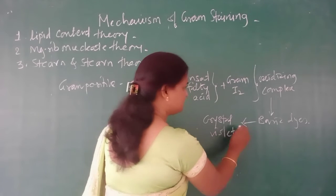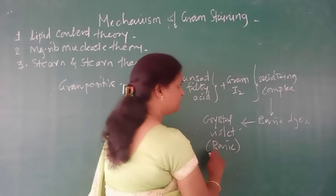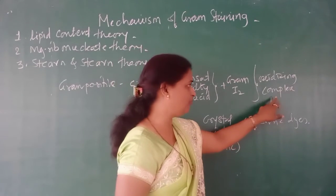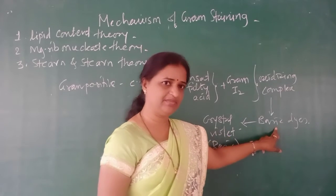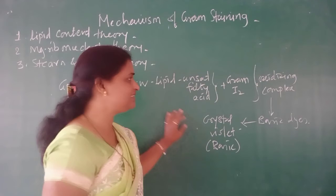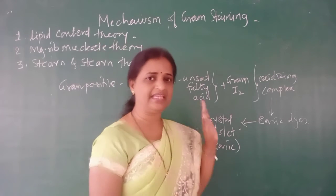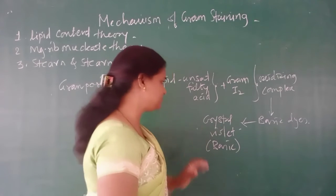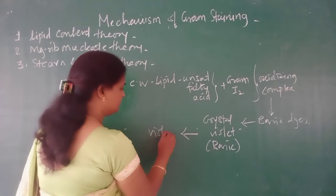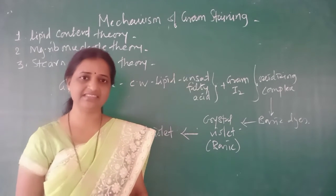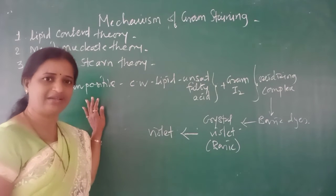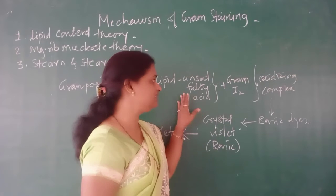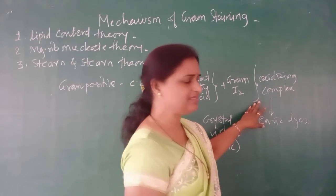This crystal violet can easily stain Gram positive bacteria, and once they get stained they cannot lose their color even after the application of the decolorizing agent. That is why Gram positive cells remain stained. In case of Gram negative cells, their cell wall does not contain unsaturated fatty acids, so no such oxidizing complex is formed.